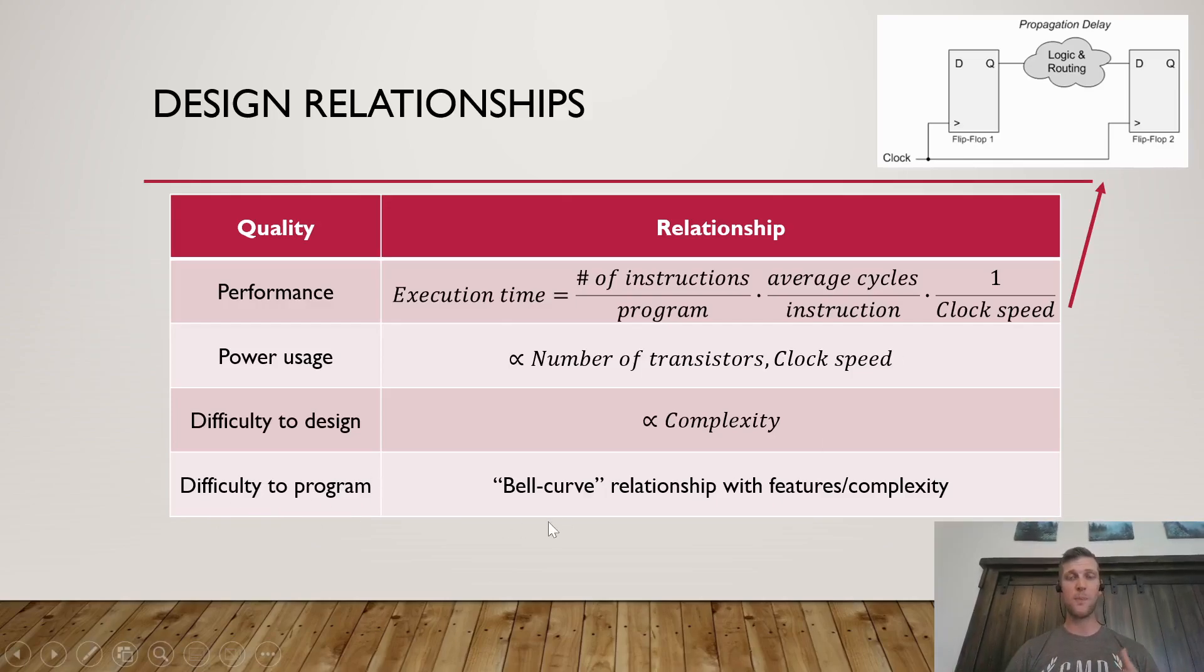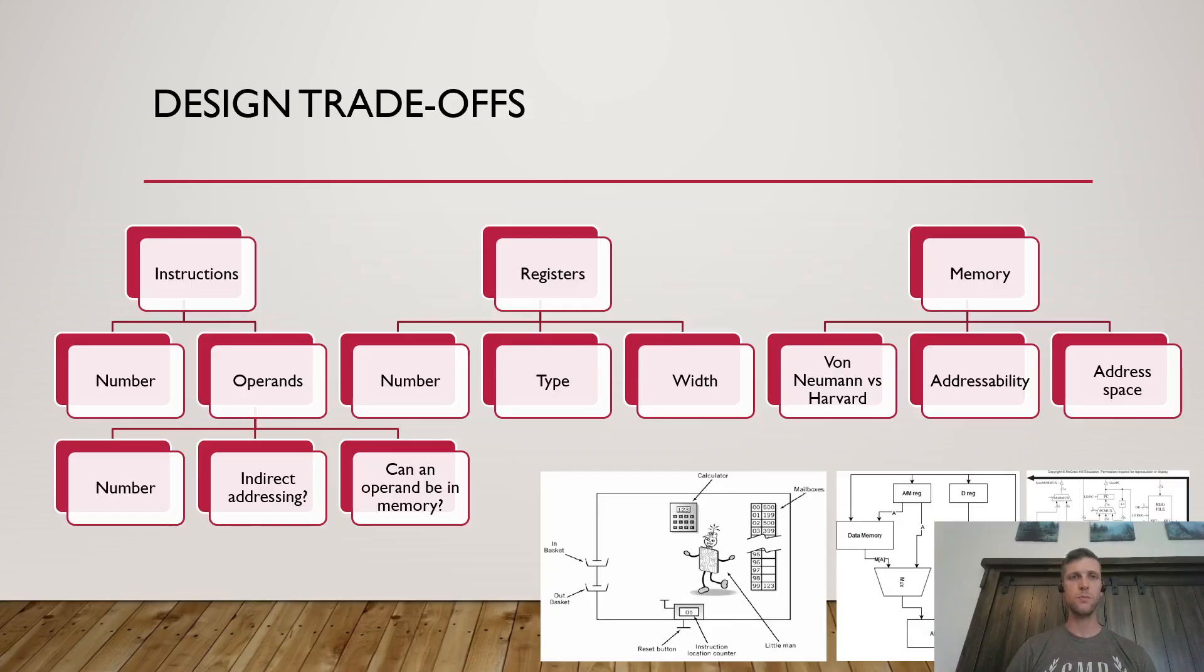Additionally, how difficult it is to program has this sort of bell curve relationship with the computer's features and its complexity. If the computer is too simple, has too few features, then it might be difficult to program because there's just less that we're able to do on any given clock cycle. We have very simple tools to work with. You can imagine also on the far end, if our computer is very complex, has a ton of features that also might be kind of difficult to program because now there's a lot that we have to kind of keep in our heads about the state of the machine as we're writing instructions for it. You want just enough complexity to be able to write useful programs, but not so much that the computer itself is difficult to understand.